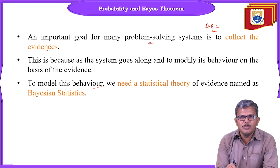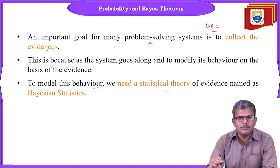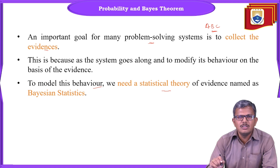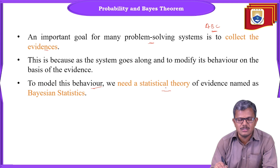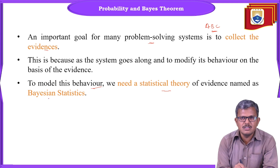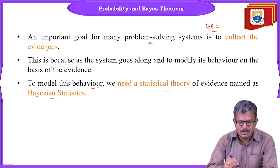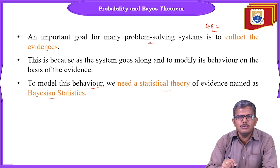The behavior of such systems completely depends on a statistical theory of evidence. We are not talking about monotonic or non-monotonic reasoning anymore. Here we take a third type of reasoning system called statistical reasoning systems. To understand the behavior of the model, we need a specific theory called the statistical theory of evidences, which we name as Bayesian statistics. By using Bayesian statistics, we give a conclusion with the help of a particular numerical value.